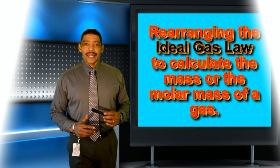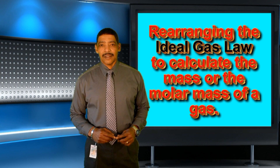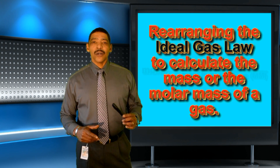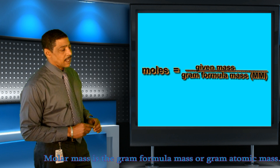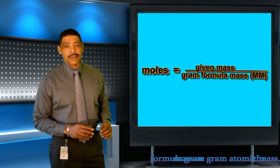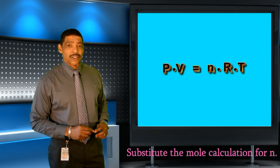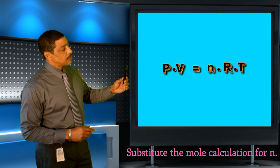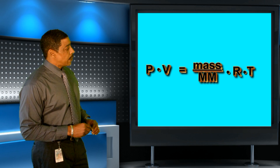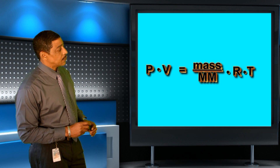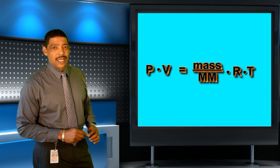By manipulating the Ideal Gas Law, it is possible to determine either the mass or the molar mass of a gas. According to the mole calculation, moles of a substance is equal to the given mass divided by the gram formula mass, or the molar mass. Inserting the mole calculation into the Ideal Gas Law equation, where P times V is equal to n times R times T, will generate the following: P times V is equal to the mass divided by the molar mass of a gas, times R times T.